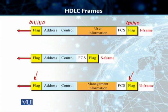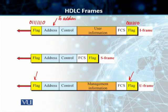The second field is the address field. This field contains the address of the secondary station. If the primary station creates the frame, it contains a 'to' address — the address of the secondary station. If a secondary station creates the frame, then there is a 'from' address in there as well.